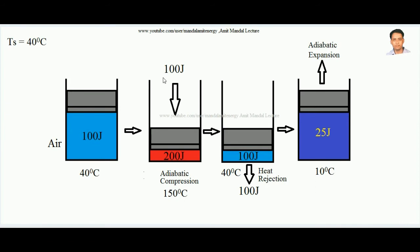Suppose this piston is forced to compress the gas adiabatically — adiabatic compression takes place. In adiabatic compression, temperature always rises. The work input for this case is 100 joules, so the net internal energy of the air becomes 200 joules. By this adiabatic compression, the temperature rises to 150 degrees centigrade.